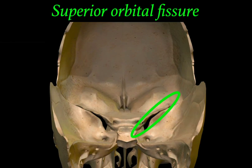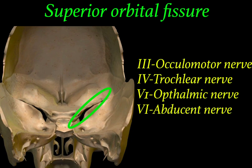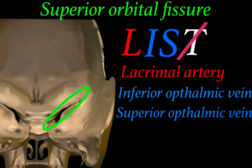The first foramina is the superior orbital fissure. The structures passing through it are the 3rd, 4th, 5th, and 6th cranial nerves. The 3rd is the oculomotor nerve, the 4th is the trochlear nerve, the 5th (trigeminal ganglion) divides into three branches — its first branch, the ophthalmic nerve, passes through the superior orbital fissure, and the 6th cranial nerve, the abducent nerve, also passes through it. Arteries and veins can be remembered with the mnemonic LIST, where T is of no use, L stands for lacrimal artery, I stands for inferior ophthalmic vein, and S stands for superior ophthalmic vein.